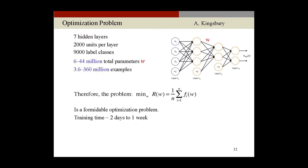When you do speech recognition, a neural network from about a year ago — from Brian Kingsbury at IBM — has seven hidden layers and up to 44 million parameters to optimize. You give it millions of examples to train, and it would take a couple of weeks on a supercomputer just to feed that amount of information. There's a massive computational exercise taking place in order to get the statistical learning model to do something as complex as understanding speech that everybody uses in different ways.